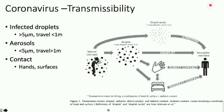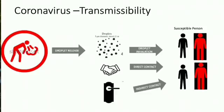Similarly, when a droplet is released by an infected person and a susceptible person comes into close physical contact — while shaking hands or hugging — that person can get sick. Through indirect contact, if an infected person has touched surfaces and contaminated objects such as doorknobs, light switches, or lift buttons, and those surfaces are touched by susceptible persons, a susceptible person can also get sick.